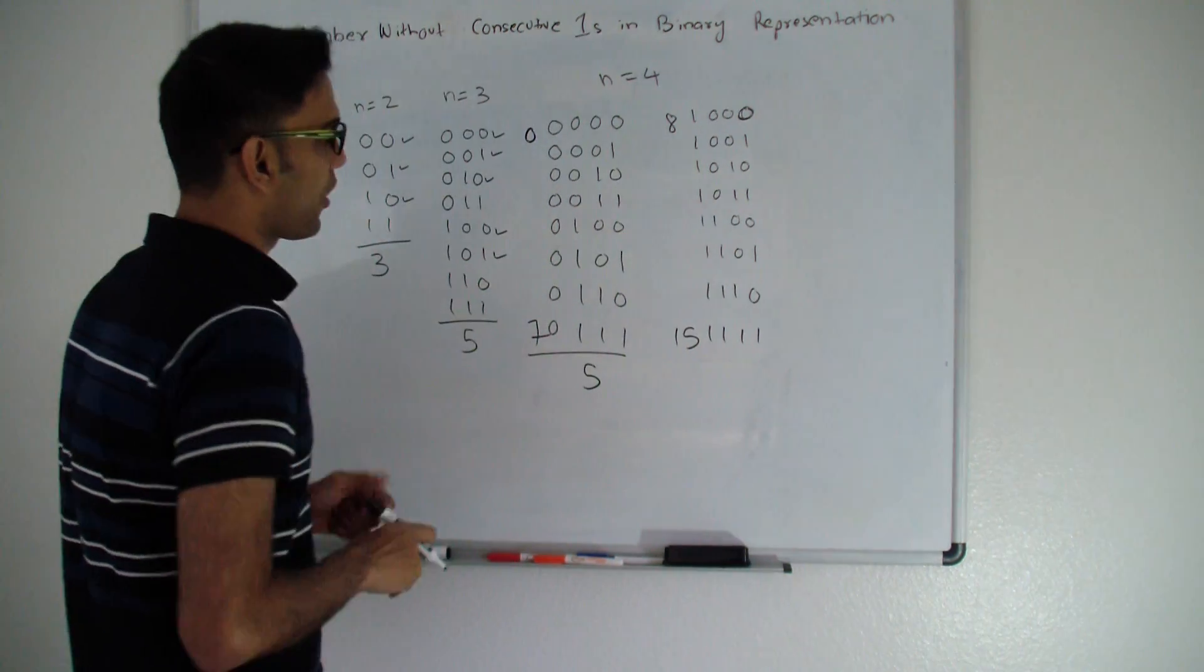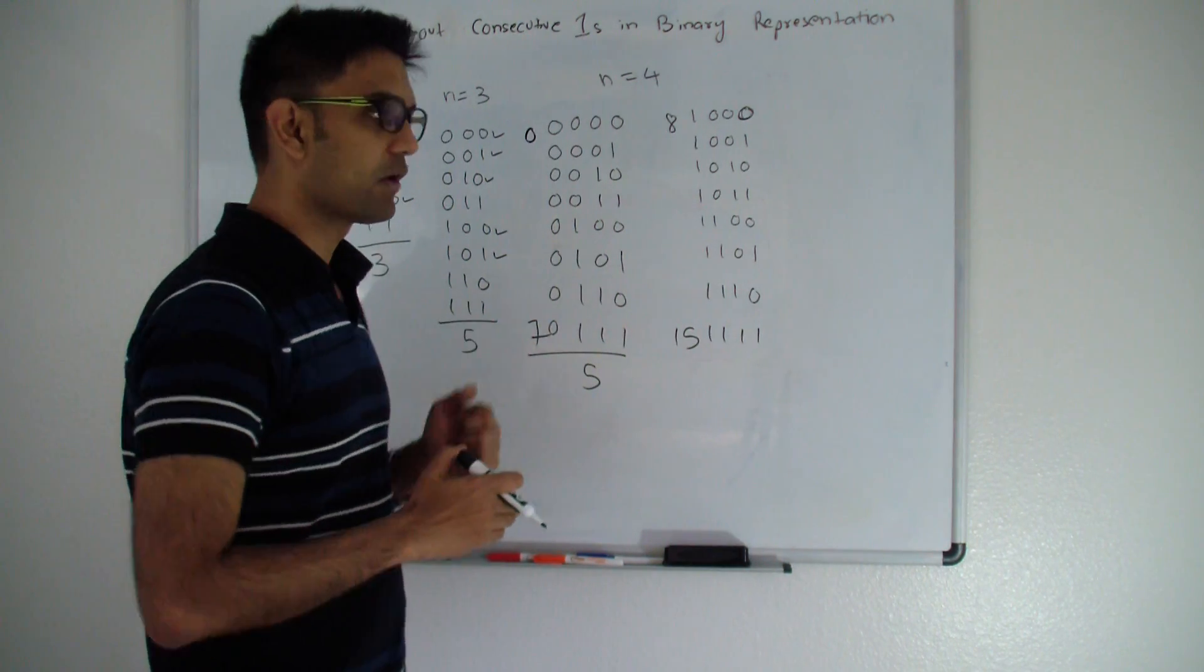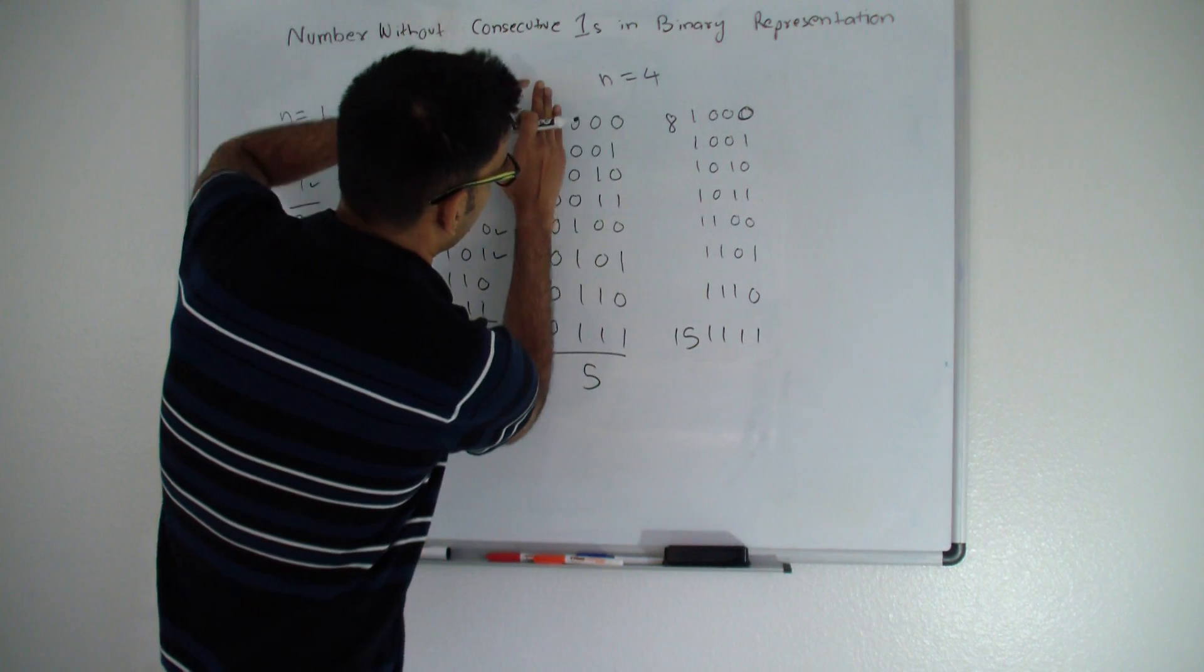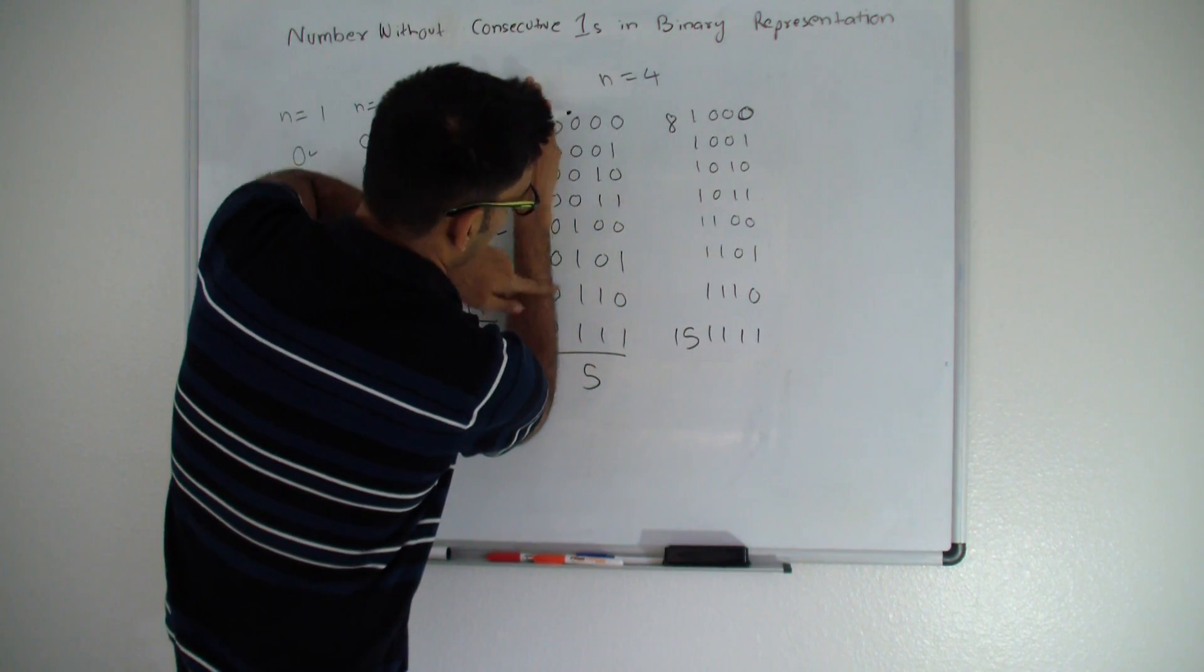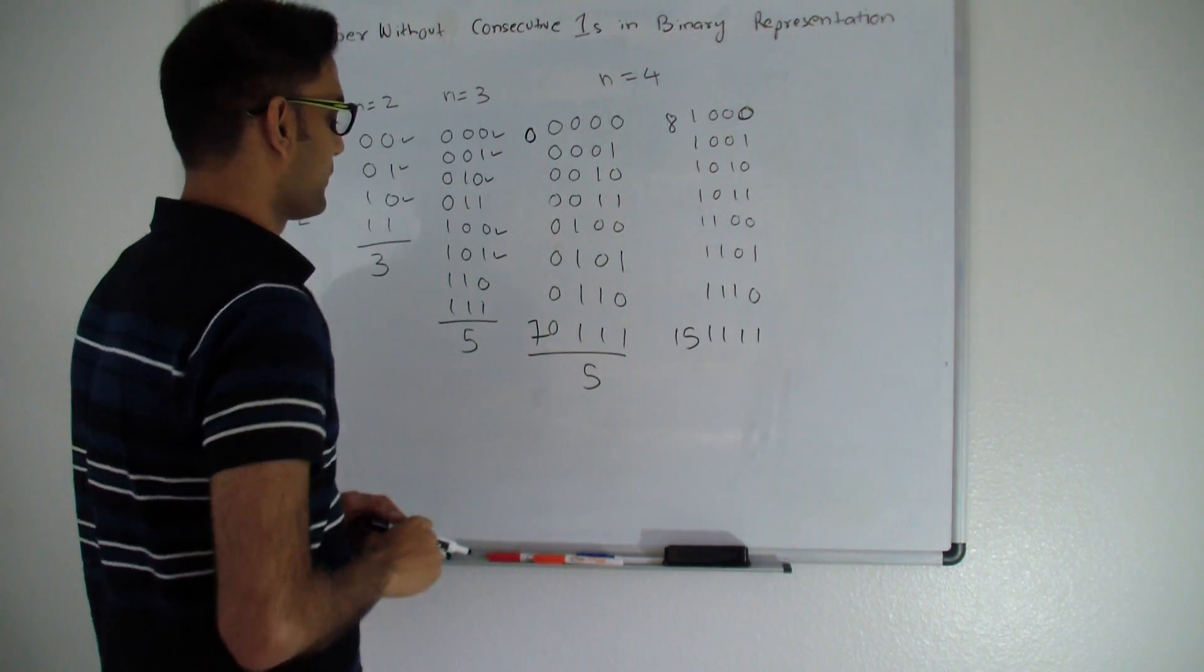Because 0 is not going to contribute to the 1, the 0 will not cause any number to become consecutive 1. So we are just looking at representation from 0,0,0 to 1,1,1, and we already calculated that number is 5, the total number of numbers.